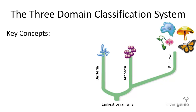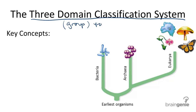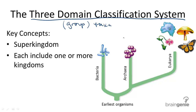A few key things to note about the three-domain classification system. What's a domain? It is a group within the classification system, or a taxa. It is the most general taxa. All life fits into three domains. Like a super kingdom, each domain includes one or more kingdoms.